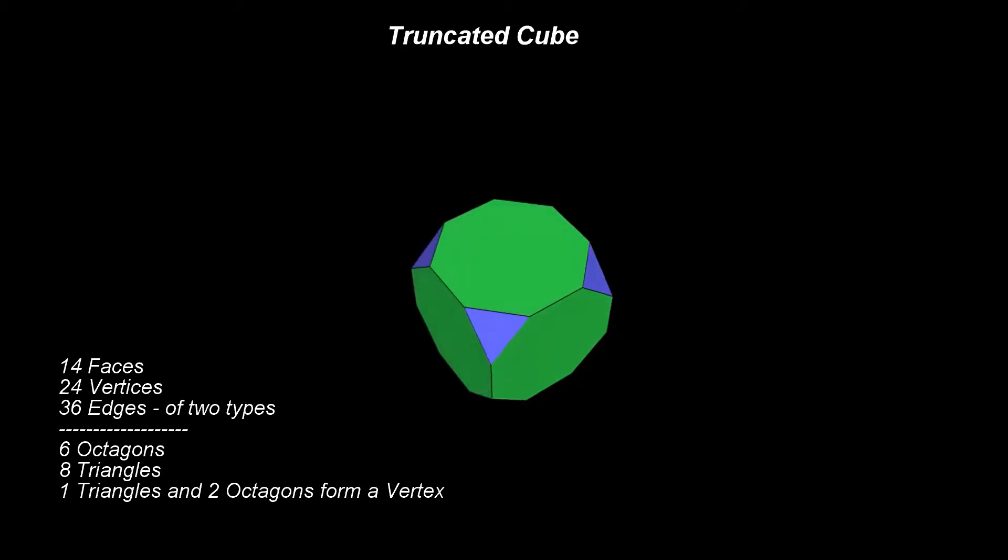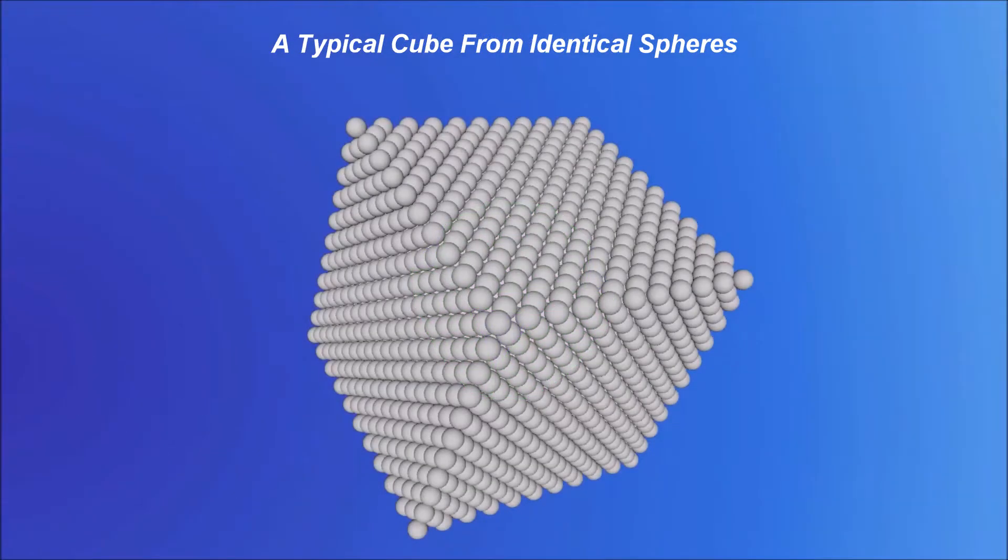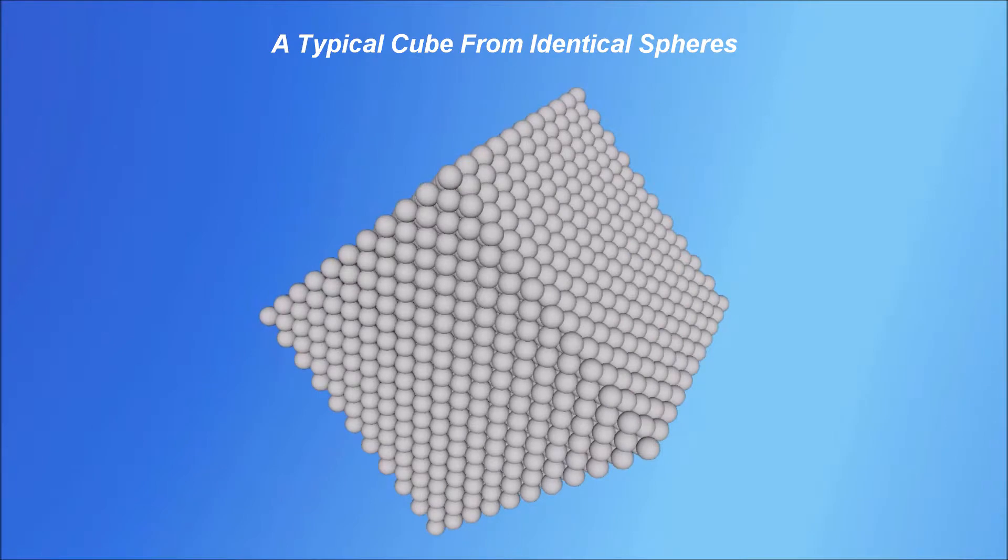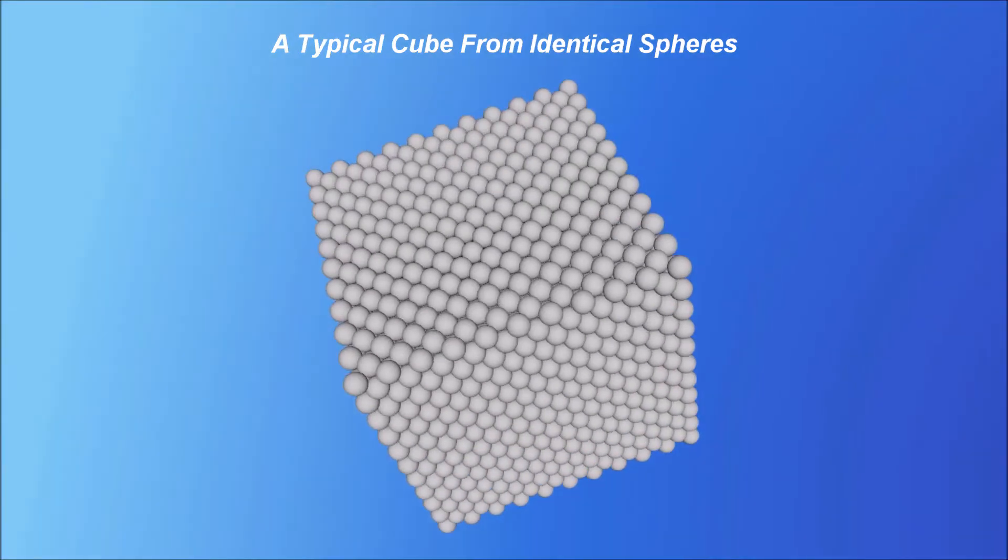First, divide each edge of the cube in three parts. Second, cut the vertexes of the cube with planes determined by the divisions done in the first step.